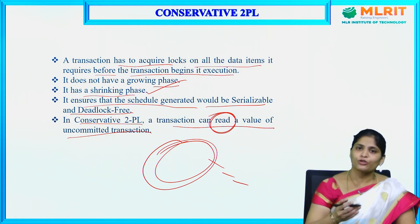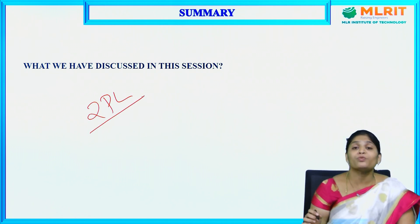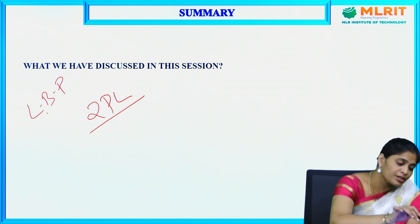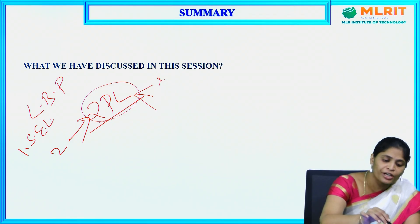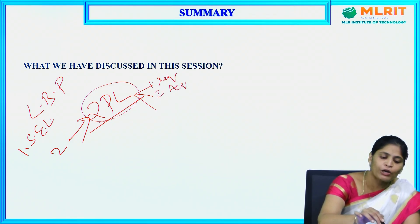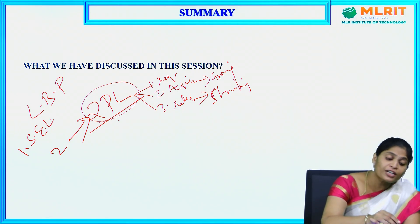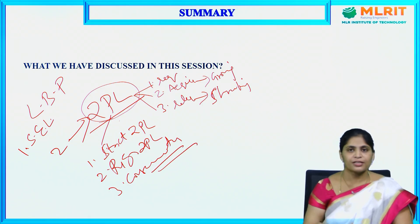In summary, we discussed the two-phase locking protocol — one of the concurrency control lock-based protocols. It has three steps: request locks, acquire locks, and release locks. Acquiring locks is the growing phase; releasing locks is the shrinking phase. The three types of 2PL are: strict 2PL, rigorous 2PL, and conservative 2PL. Thank you.